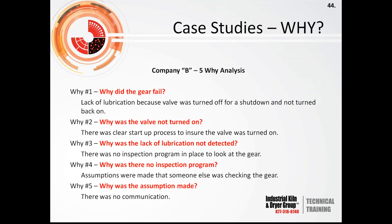The five-why analysis on Company B: Why was there lack of lubrication? Because the valve was turned off for a shutdown and not turned back on. Why was the valve not turned on? There was no clear start-up process to ensure the valve was turned on. Why was the lack of lubrication not detected? No inspection program in place to regularly look at the gear. Why was there no inspection program? Again, assumptions — somebody else was checking it. And again, no communication between departments, nobody checking it: significant failures, significant costs, and reduced reliability.